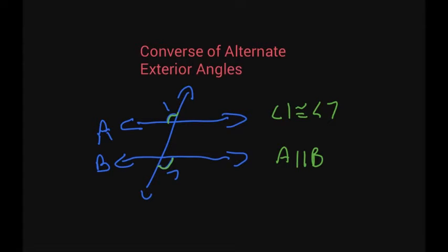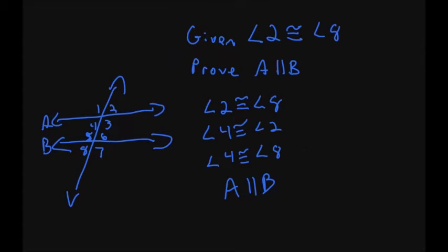So let's use some of these rules to make some proofs. We're given that angle 2 is congruent to angle 8, and we need to prove that A is parallel to B. First part of the proof: angle 2 is congruent to angle 8 — that was given. Then angle 4 is congruent to angle 2, and we know they're congruent because they are vertical angles — vertical angles are congruent.